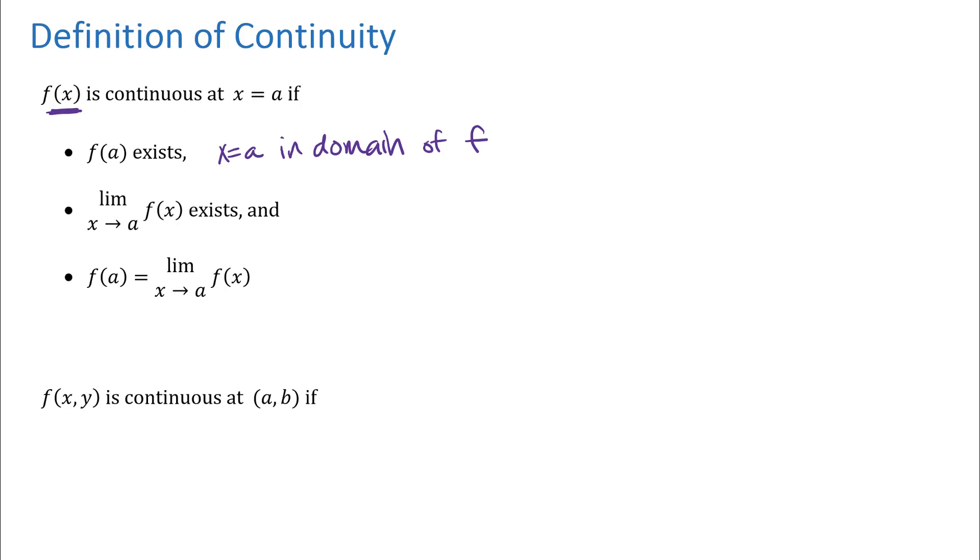The third part here is that those two things are equal. So sometimes you'll see this definition written with just this last part here, which would actually include the other two. If you're going to talk about two things being equal, then the two things on each side have to exist as well.